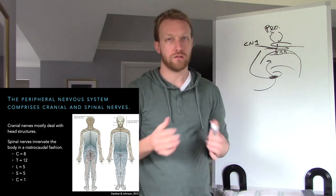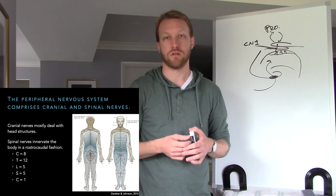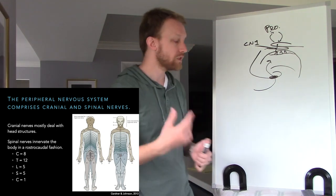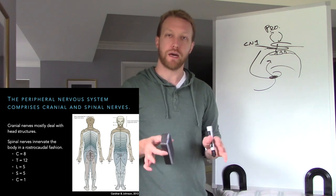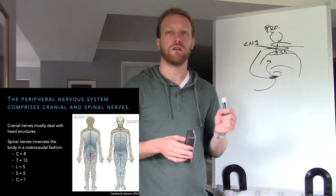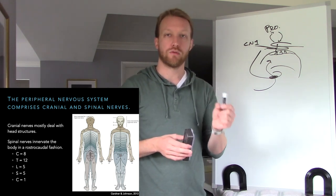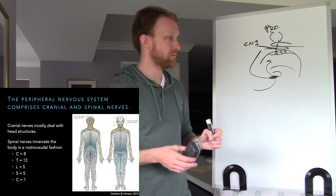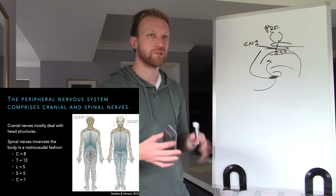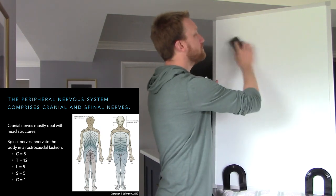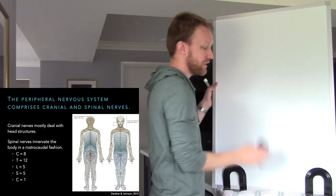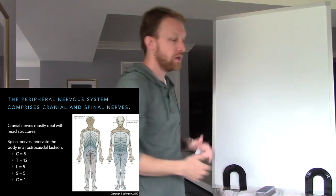All other cranial nerves are part of the peripheral nervous system. We'll focus on spinal nerves because those are clearly pure peripheral nervous system. The motor neurons live within the central nervous system, but all the action happens out in the periphery at the neuromuscular junction.